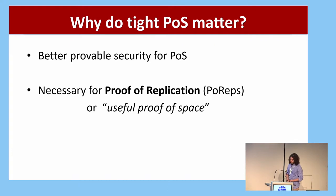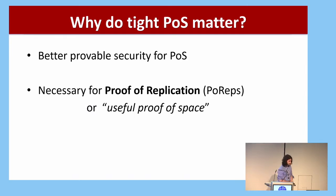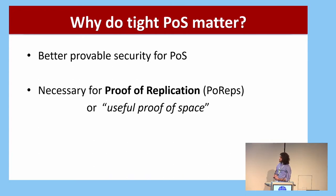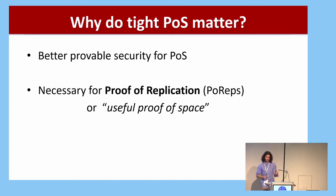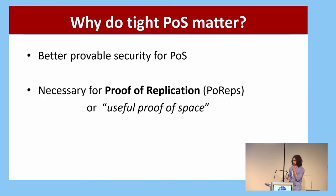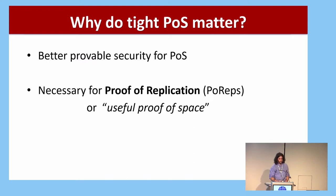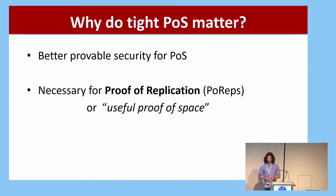Why do tight proofs of space matter? First, we can get better provable security, just like in any tight security exercise. We want the gap between what the honest prover does and the best possible adversary to be small — otherwise we either tune parameters for the worst adversary, making life very hard for honest provers, or we set reasonable parameters and some adversary virtually doesn't have to use any space. Second, tightness is necessary for a new primitive called proof of replication. I won't cover proof of replication here, but I'll discuss useful proofs of space, which are closely related and greatly benefit from tight proofs of space.